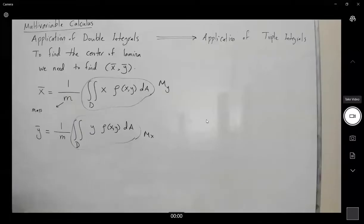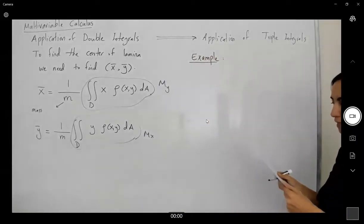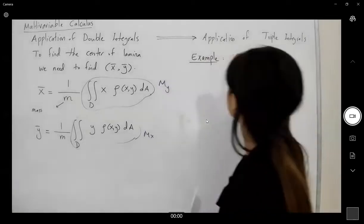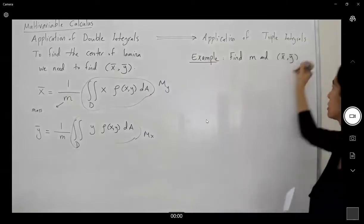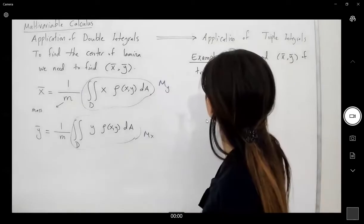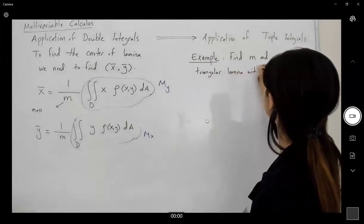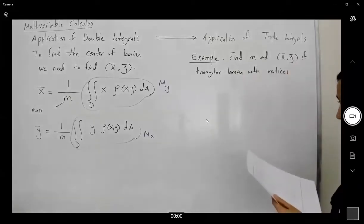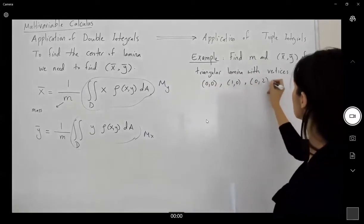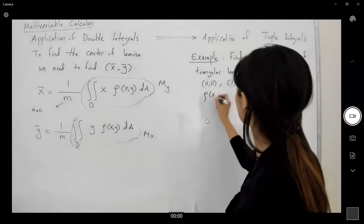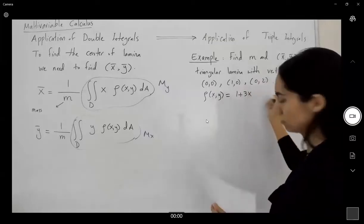For example, the question says: find the mass and center of mass — x̄, ȳ — the balancing point of the triangular lamina with vertices (0,0), (1,0), and (0,2). Suppose the density function is given as ρ(x, y) = 1 + 3x + y.